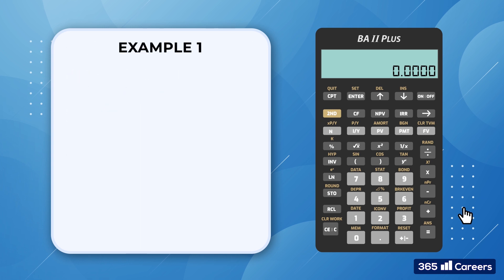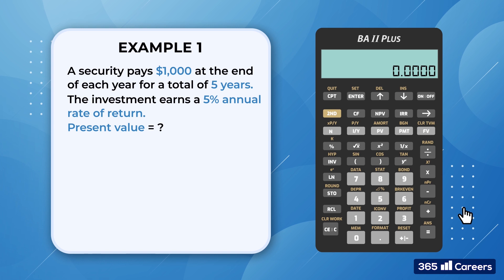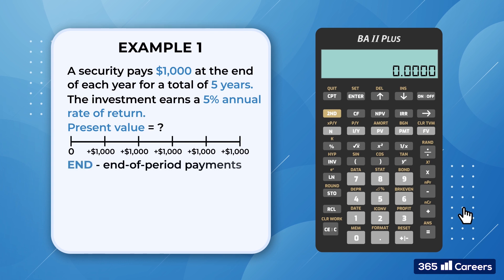Here's the first task. John invests in a security paying $1,000 at the end of each year for a total of five years. The investment earns a 5% annual rate of return. John would like to calculate the present value of this security. The payments occur at the end of each year, so we need to use the END mode.